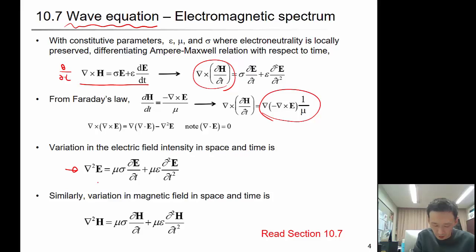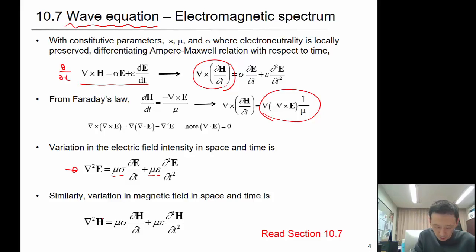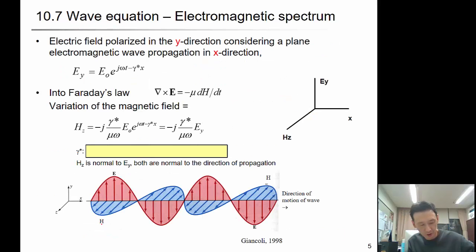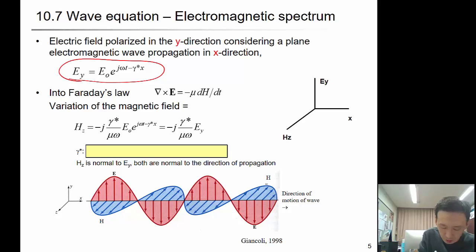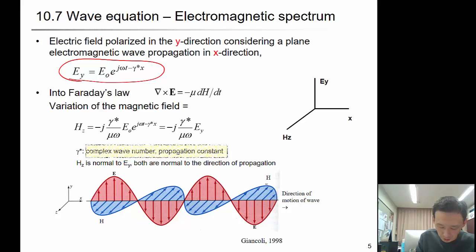The variation in electric field intensity in space and time is expressed as: the gradient squared of the electric field equals mu times sigma, where sigma is the electric conductivity, mu is the magnetic permeability, and epsilon is the permittivity. Similarly, the variation in magnetic field in space and time is expressed almost the same, just replacing E with H. The electric field polarized in the y-direction, for a plane electromagnetic wave propagating in the x-direction, is expressed as a wave equation, where E0 is the initial absolute magnitude of the field, and gamma-star is called the complex wave number, also called the propagation constant.